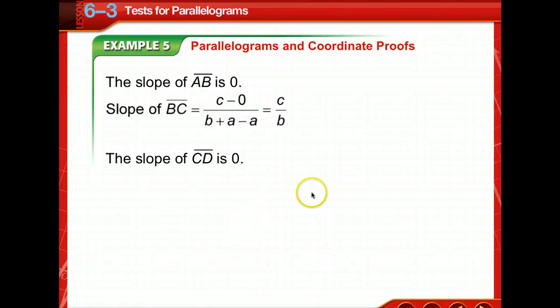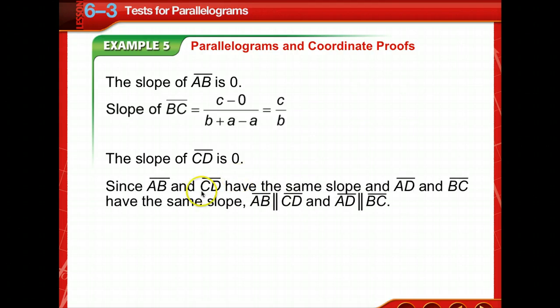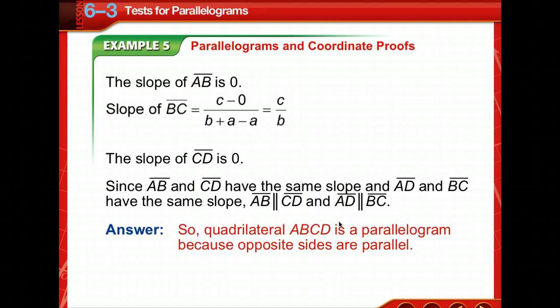And the slope of BC is C over B. So AB and CD have the same slope and AD and BC have the same slope. So we've got two sets of parallel lines. So we have this quadrilateral is a parallelogram because opposite sides are parallel.